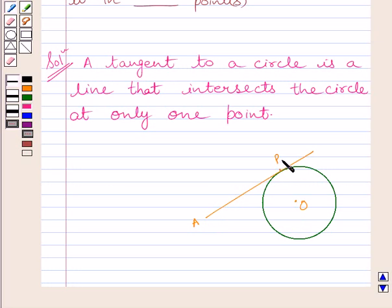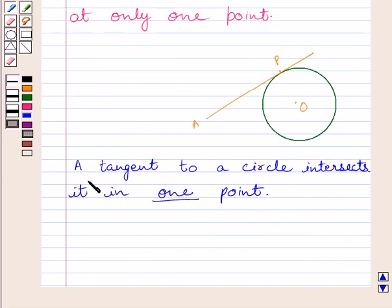So our required answer is 1. Now we can write a tangent to a circle intersects it in one point.